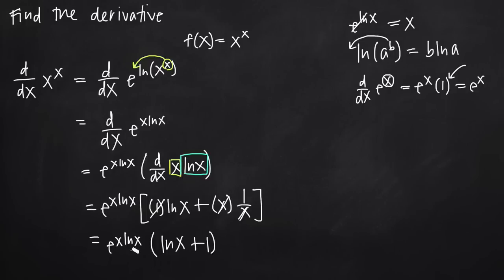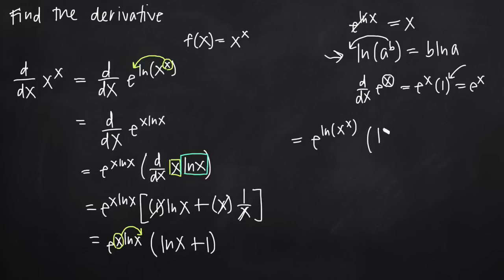Our last step is to simplify e to the x ln x back. We move that exponent x back to become an exponent on x, reversing what we did before. So e to the x times natural log of x becomes e to the natural log of quantity x to the x. Since e and natural log cancel, we're simply left with x to the x.